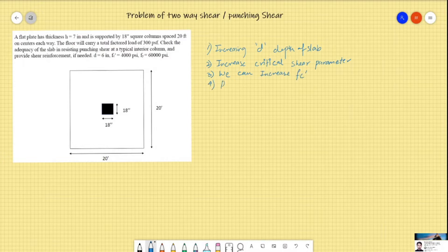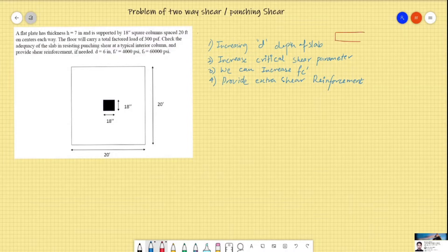Increasing depth of slab actually means to increase the depth of the slab by one inch or one and a half inches. So if this is our slab, this is the effective depth, and we can increase the depth of slab. Critical shear parameter can be increased by column capital or drop panel.